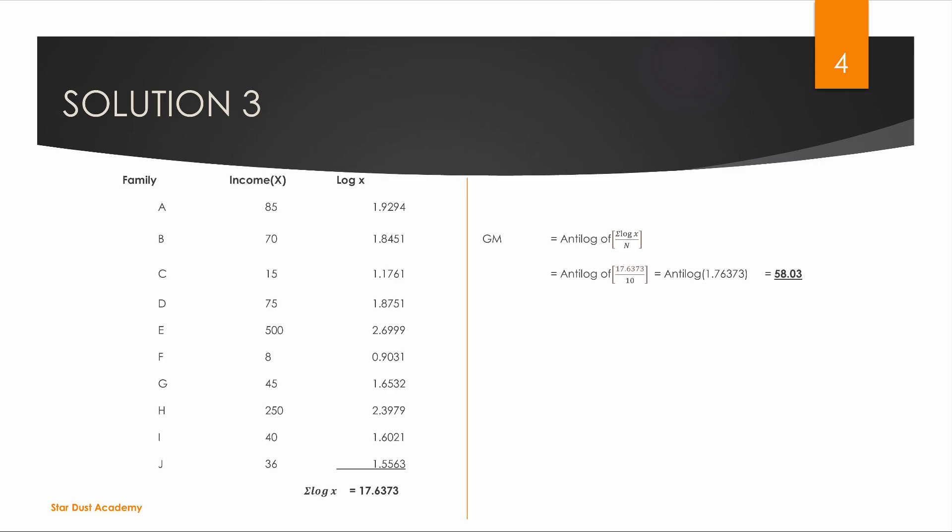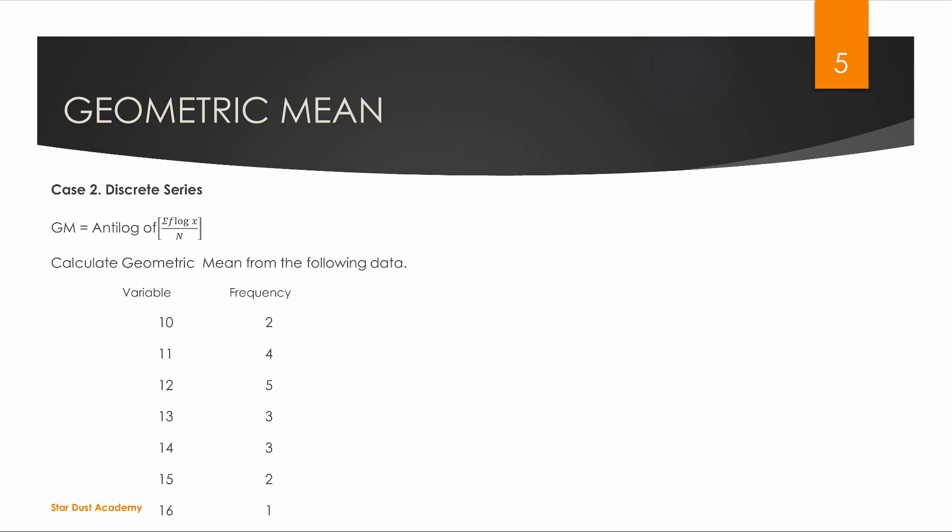Then the value is equal to the antilog. If you have a point, you can add 1. Then you add 2 points. The geometric mean is 58.03.